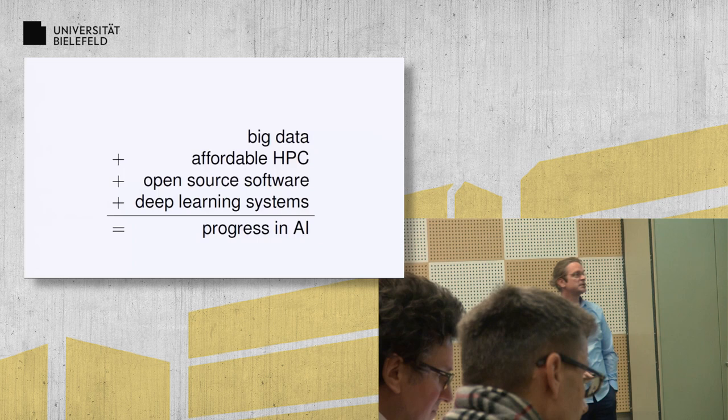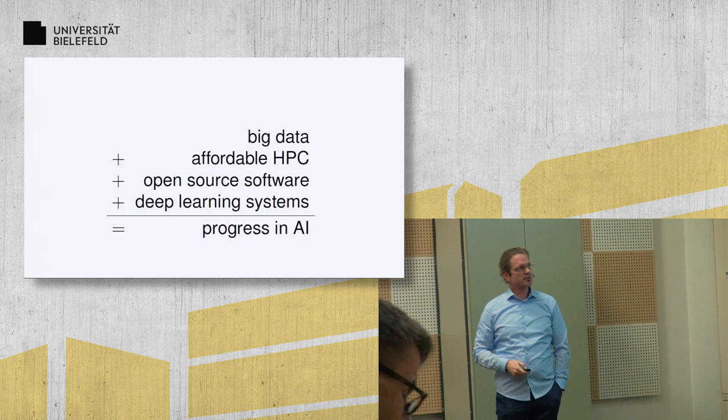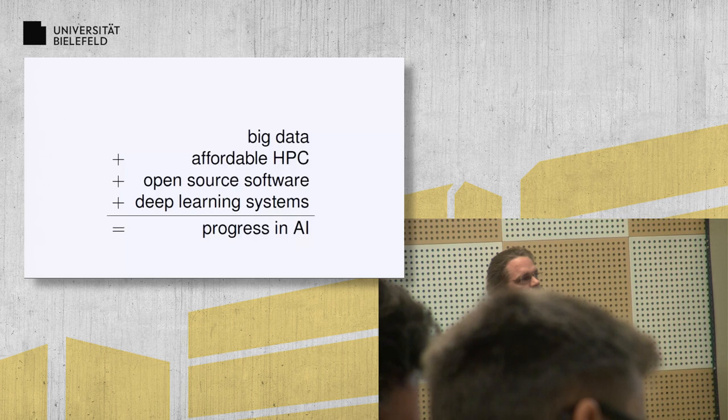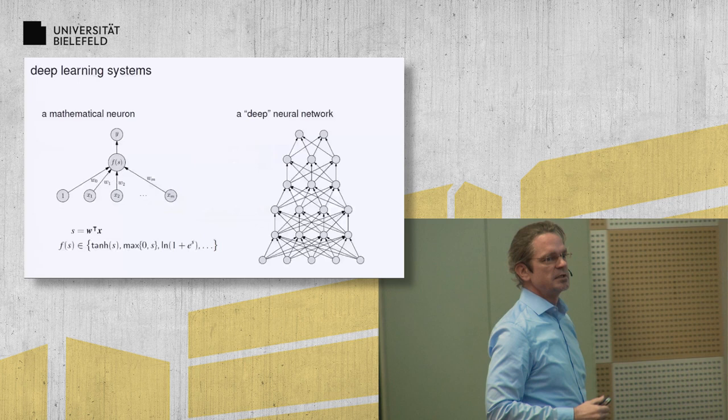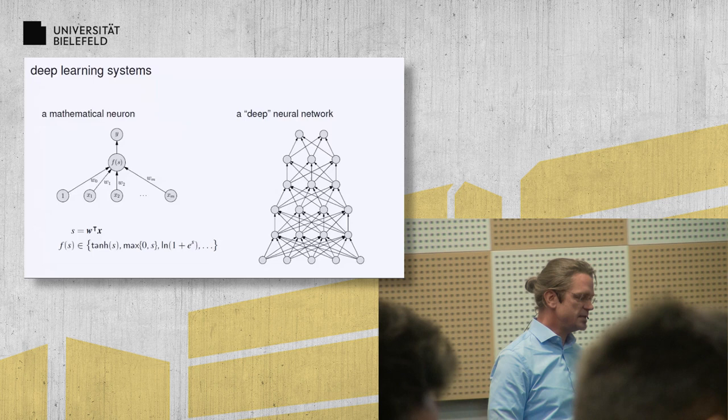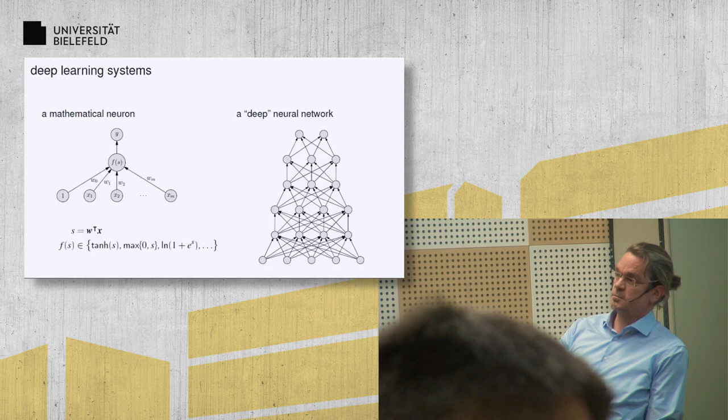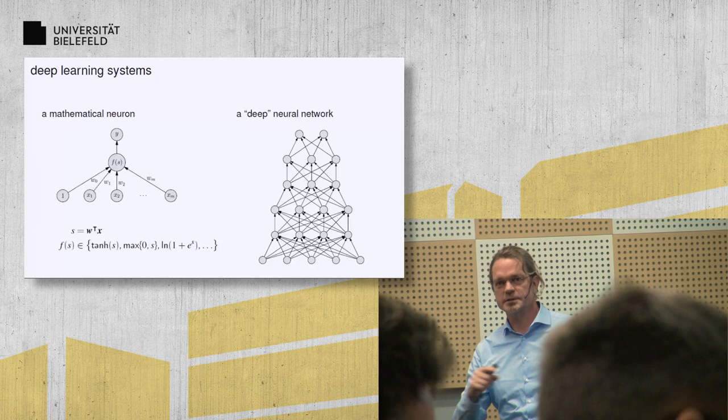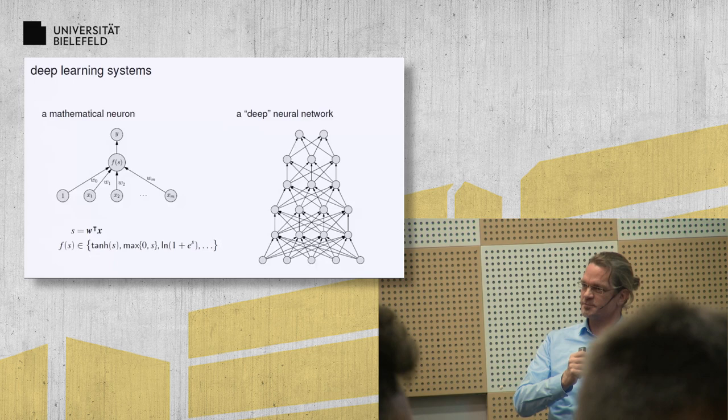And then, there is this slightly technical term, something we call deep learning systems. Christian has already talked about that. Those four things together have led to this progress, current progress in artificial intelligence, have led to this global phenomenon of everybody being interested in AI and machine learning these days. Now, I wanted to say something about deep learning, and because I studied computer science and physics here in Bielefeld, I thought there might be a lot of computer science and physicists in the audience, so my presentation is slightly more technical than that of Christian.